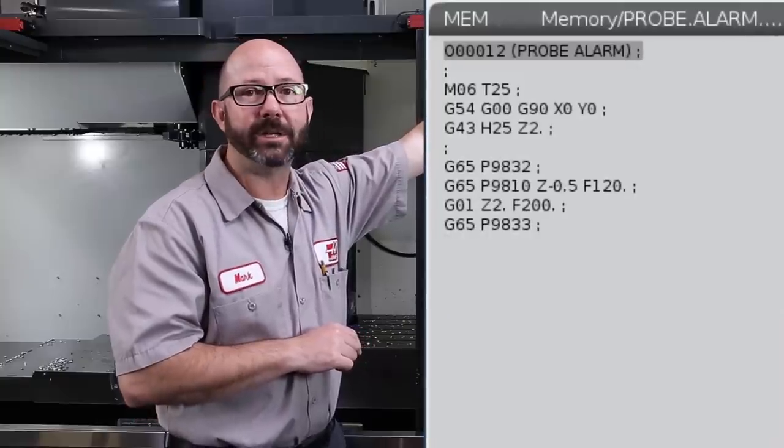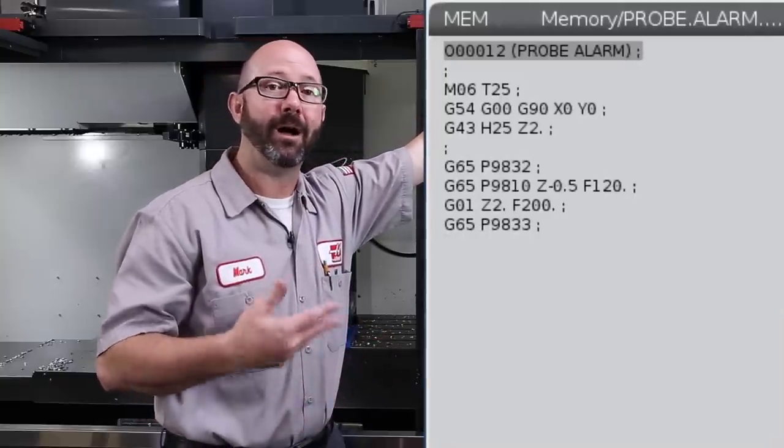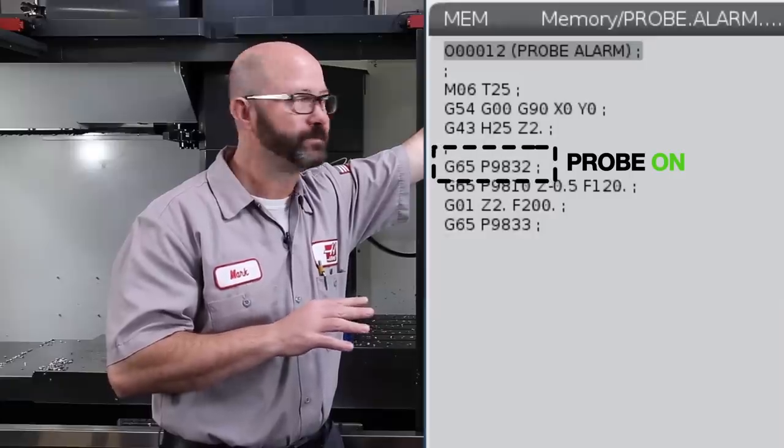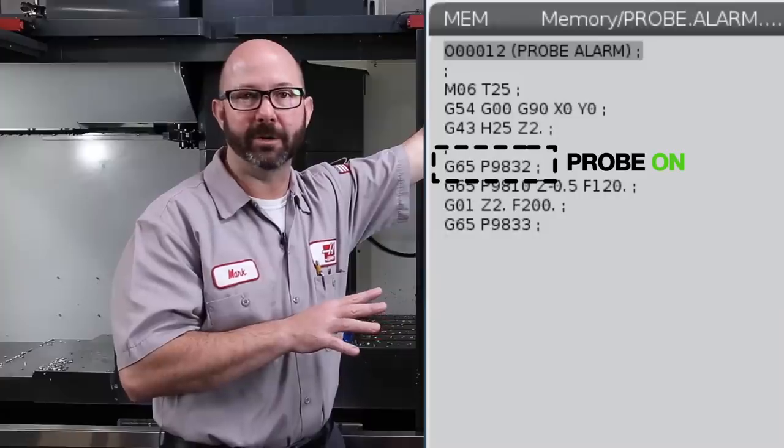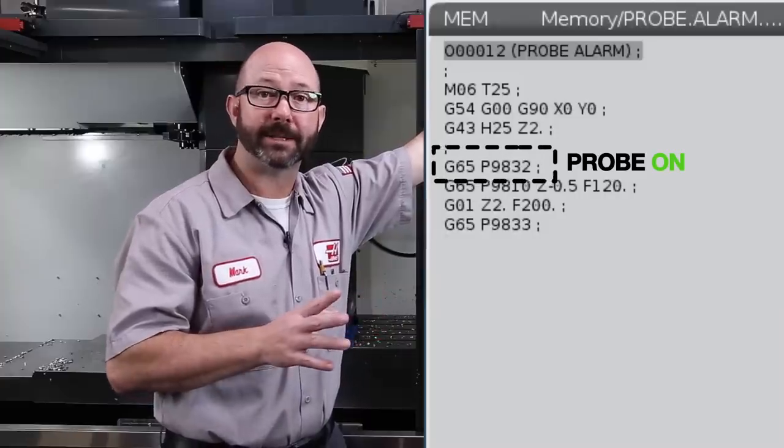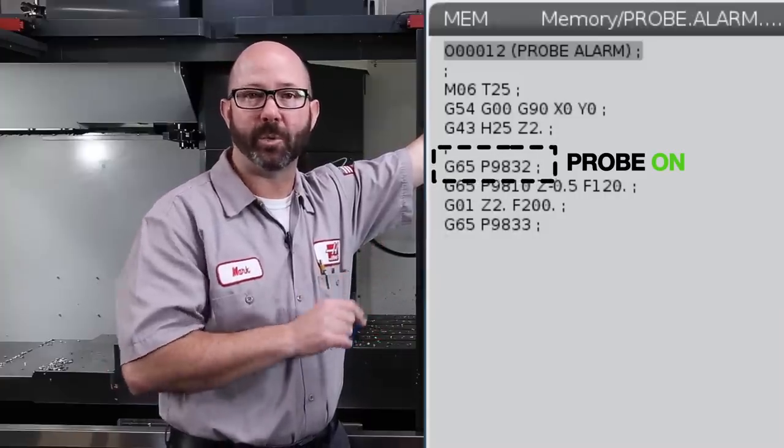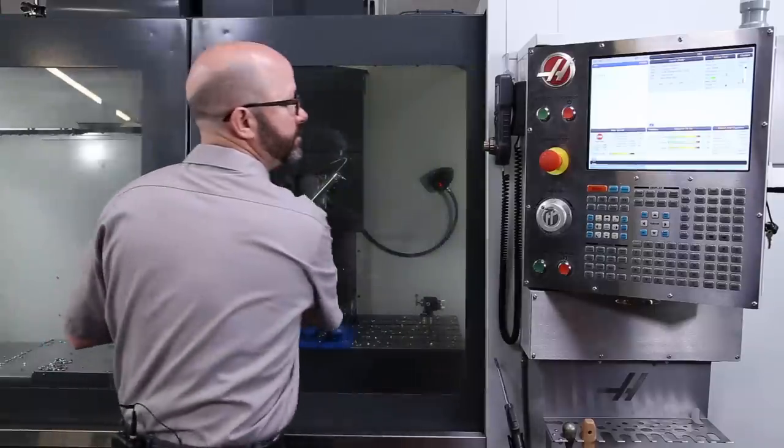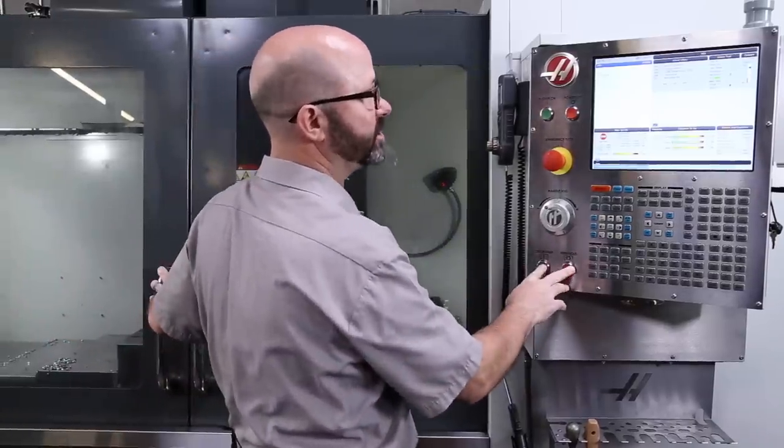Our next line of code is simply turning the probe on using a G65P9832. Now this is an important line of code. In fact, let's enter this into MDI and I'll show you what it does. Okay, so G65P9832 are up on my screen. I'm going to press cycle start.